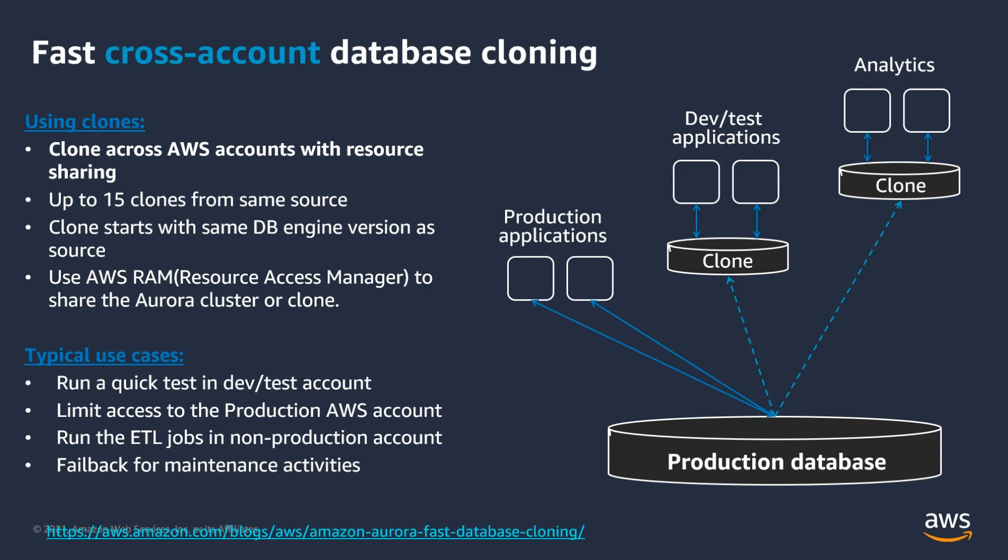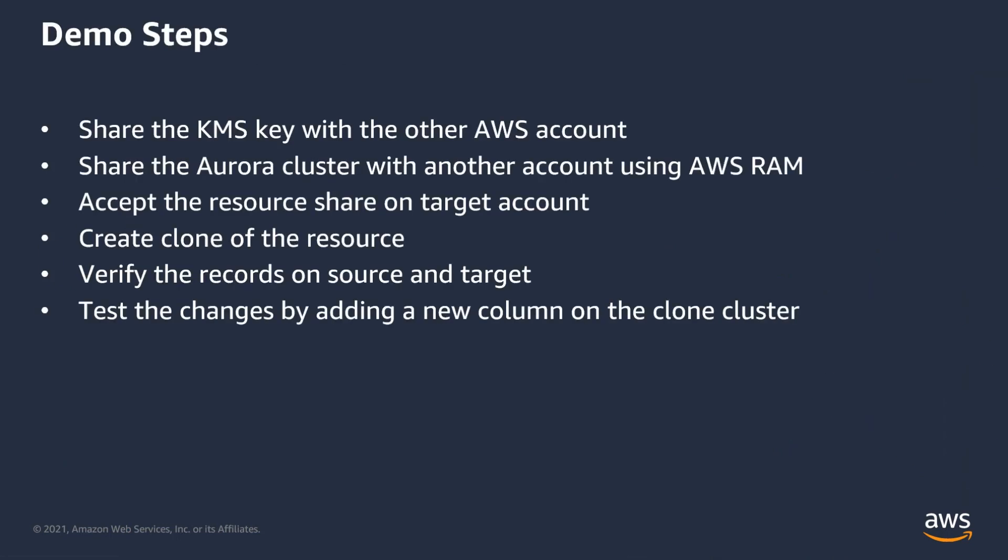Let's jump right into the demo and see how Aurora cross-account cloning works. In this demo, we will use an Aurora PostgreSQL database encrypted using a KMS encryption key. The first step is to share the KMS key with the target account, then share the Aurora cluster using AWS Resource Access Manager. We will then switch to the target account, accept the resource share, and create a clone. Finally, we will verify the tables in our source and target database, add a new column, and verify the data.